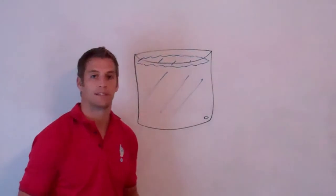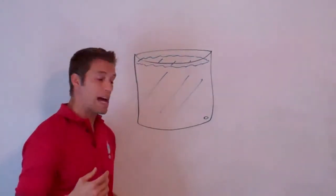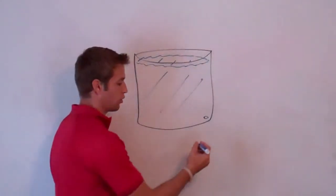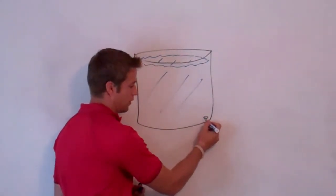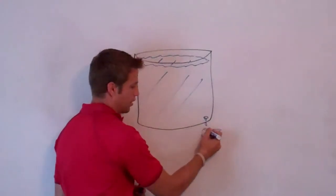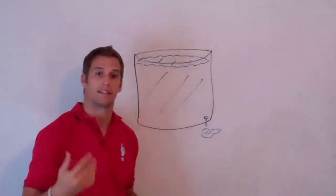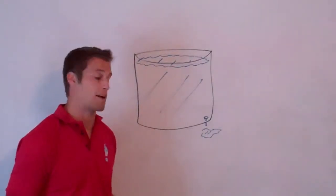And that hole represents the natural ticking away of your lifespan. So that hole is dripping out water. And that water represents aging or the lessening of your lifespan or the lessening of your time on earth.